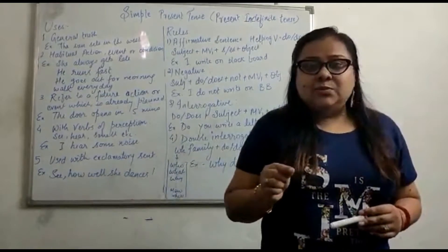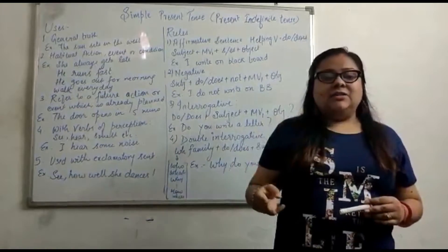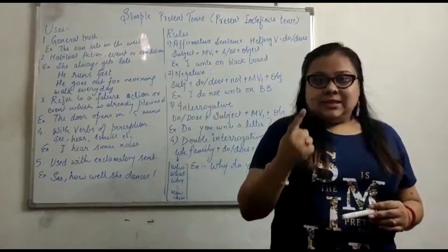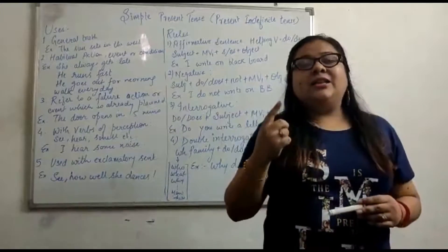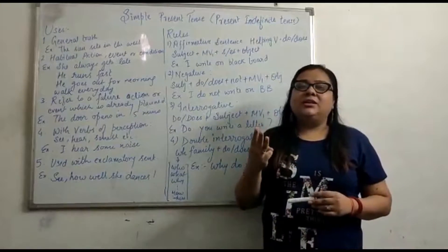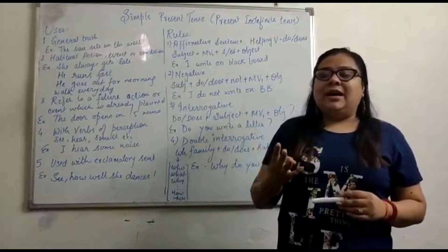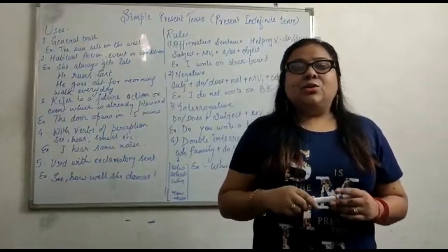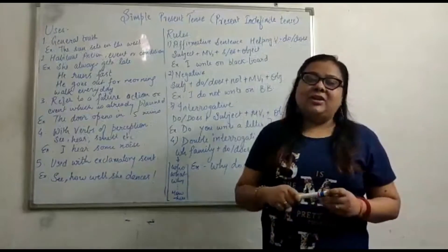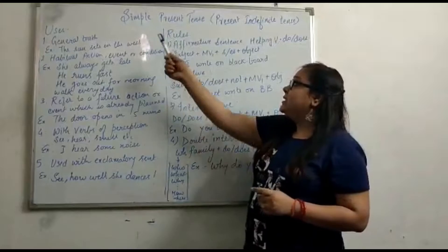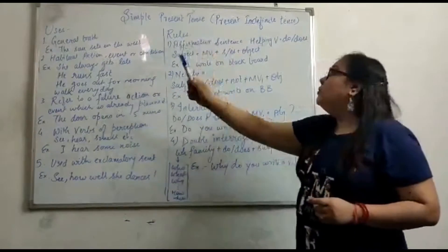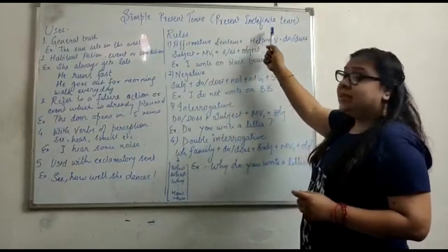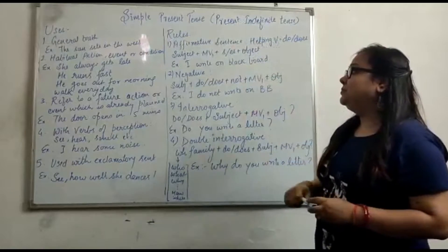Each tense is again classified into four types: the first is simple, another one is progressive, the third one is perfect, and the fourth one is perfect continuous. I will begin with the very first one — simple present tense, more popularly known as present indefinite tense.